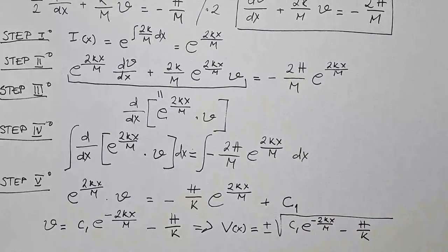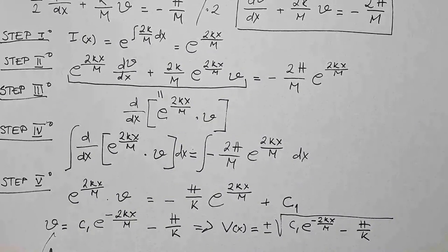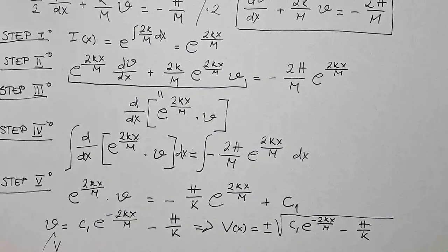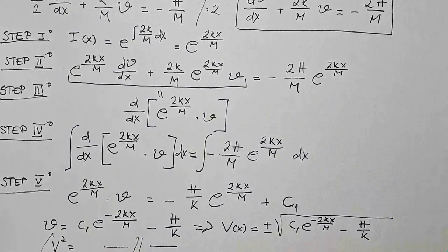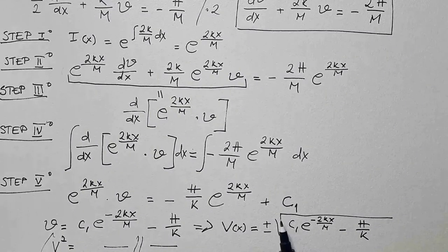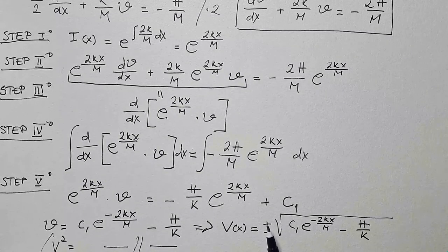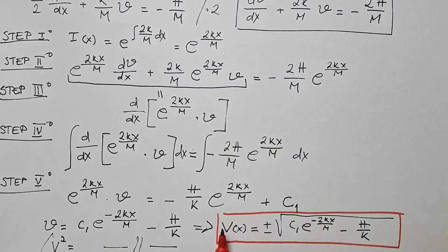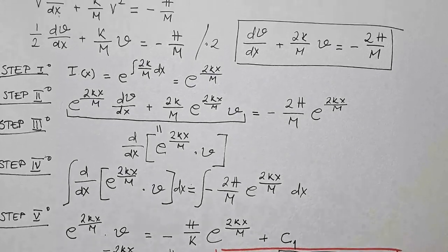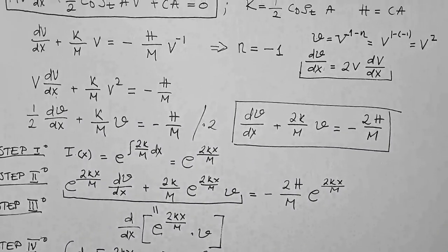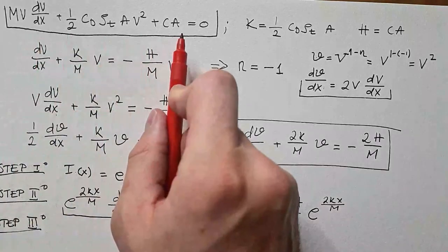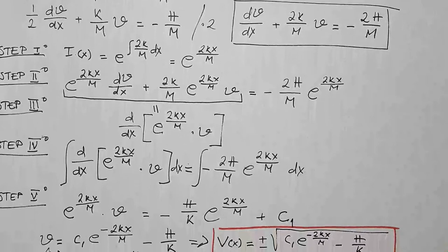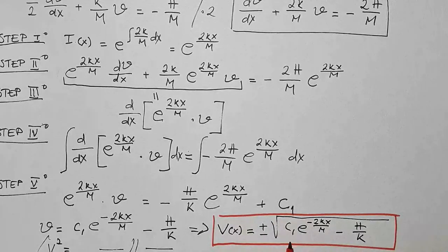Just to clarify the step I skipped: we have V² equal to that expression, and then to get the solution in V we take a square root, giving two solutions — plus and minus — yielding this expression. This is the general solution of our Bernoulli's equation, and notice that this general solution contains the integration constant C₁.